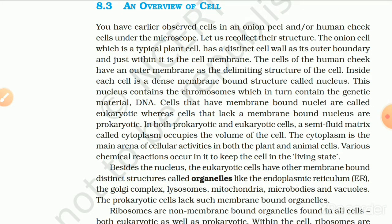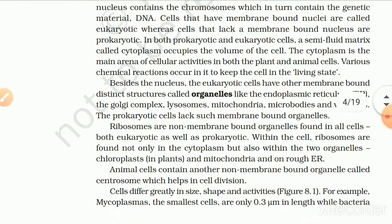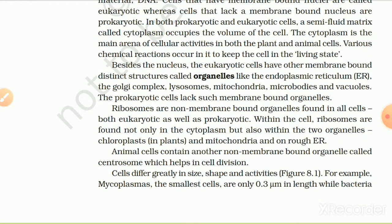8.3 An Overview of Cell. You have earlier observed cells in an onion peel and/or human cheek cells under the microscope. The onion cell, which is a typical plant cell, has a distinct cell wall as its outer boundary and just within it is the cell membrane. The cells of the human cheek have an outer membrane as the delimiting structure. Inside each cell is the dense membrane-bound structure called the nucleus. In both prokaryotic and eukaryotic cells, a semi-fluid matrix called cytoplasm occupies the volume of the cell. The cytoplasm is the main arena of cellular activity in both plants and animal cells.